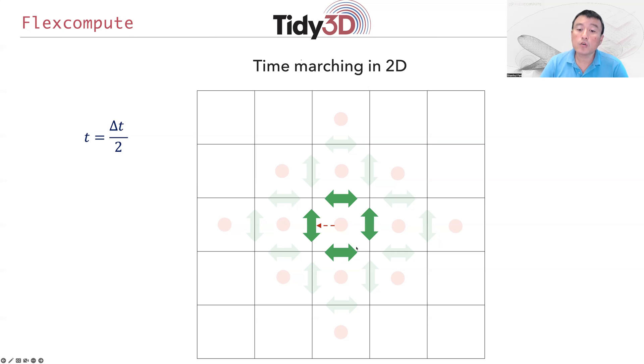At t equal to one-half times Δt, this information updates all four H fields. The information has propagated to the edge of this square. If you continue to the next step, the information of the four H fields is used to update the electric field components as indicated by these four red dots.